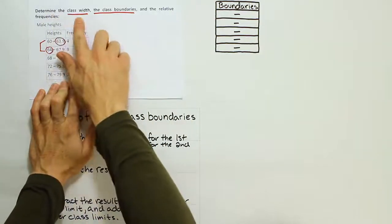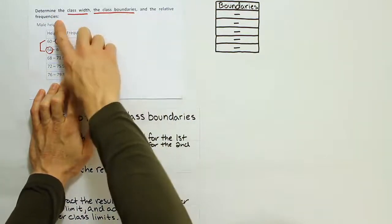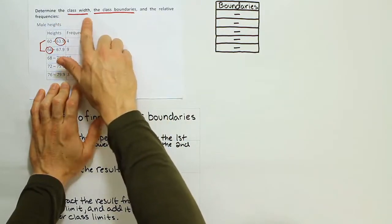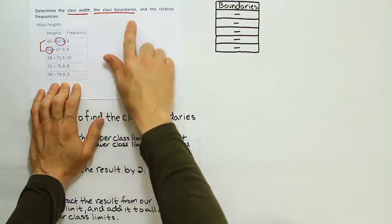This problem asks us to determine the class width, the class boundaries, and the relative frequencies for the following frequency table. We're just going to focus on these two items, the class width and the class boundaries. That's why I've underlined them here.